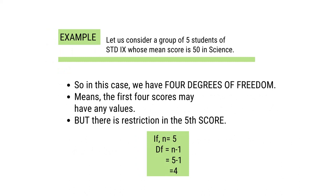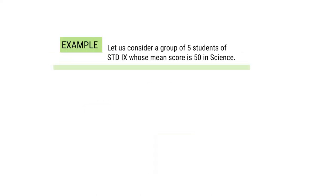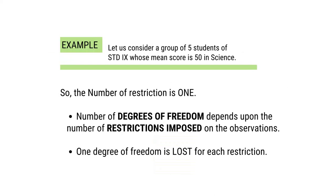The first 4 scores may have any values, but there is a restriction on the 5th score, where n equals 5. Degree of freedom is equal to n minus 1, that is 5 minus 1, which equals 4. So the number of restrictions is 1. The number of degrees of freedom depends upon the number of restrictions imposed on the observations. One degree of freedom is lost for each restriction.